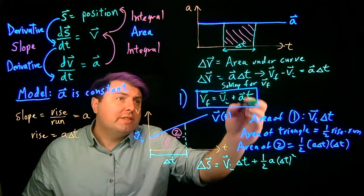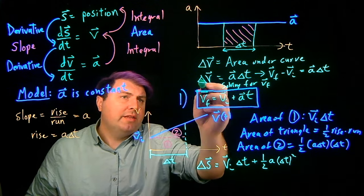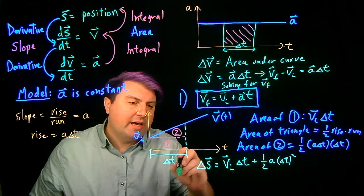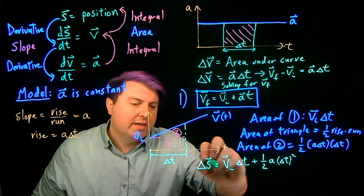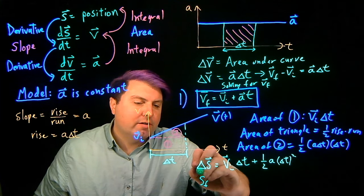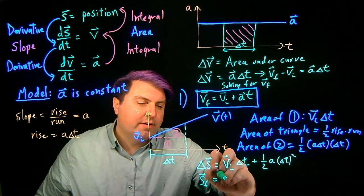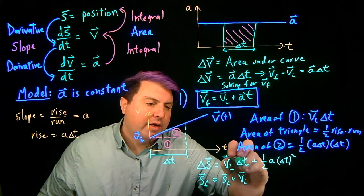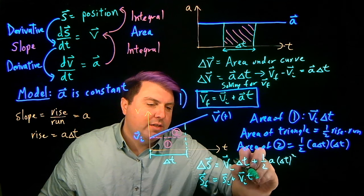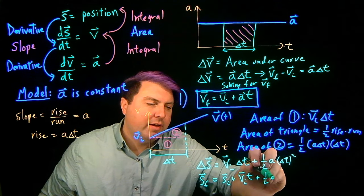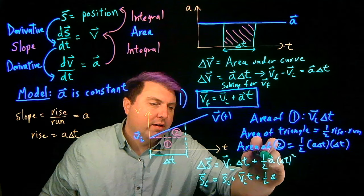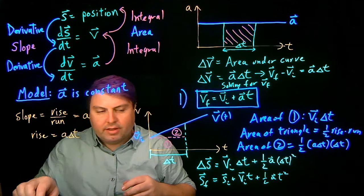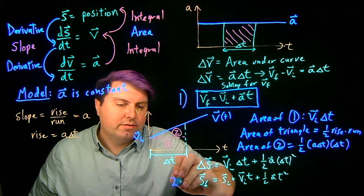Just as we wrote delta v as vf minus vi, we can write delta s as sf minus si, and bring si over to the other side. So sf equals si plus vi times t plus one half a times t squared. This is equation two.